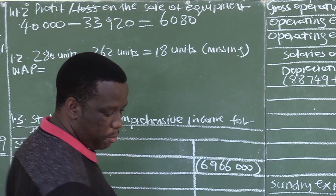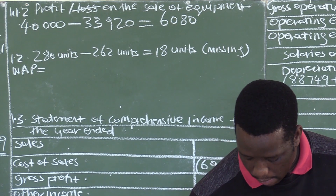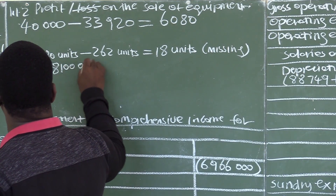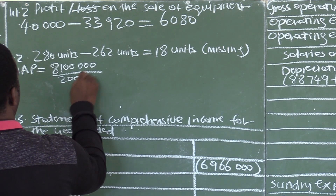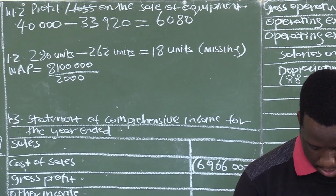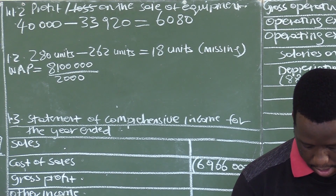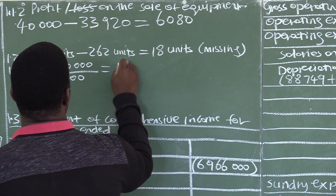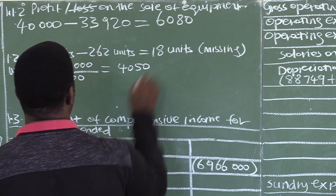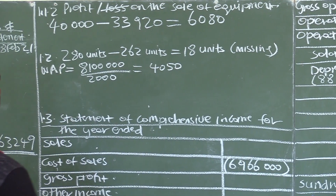The weighted average price is our total cost divided by the number of units. Our total cost is 8,100,000 divided by 2,000 units. That gives us 4,050. So the weighted average price is 4,050.